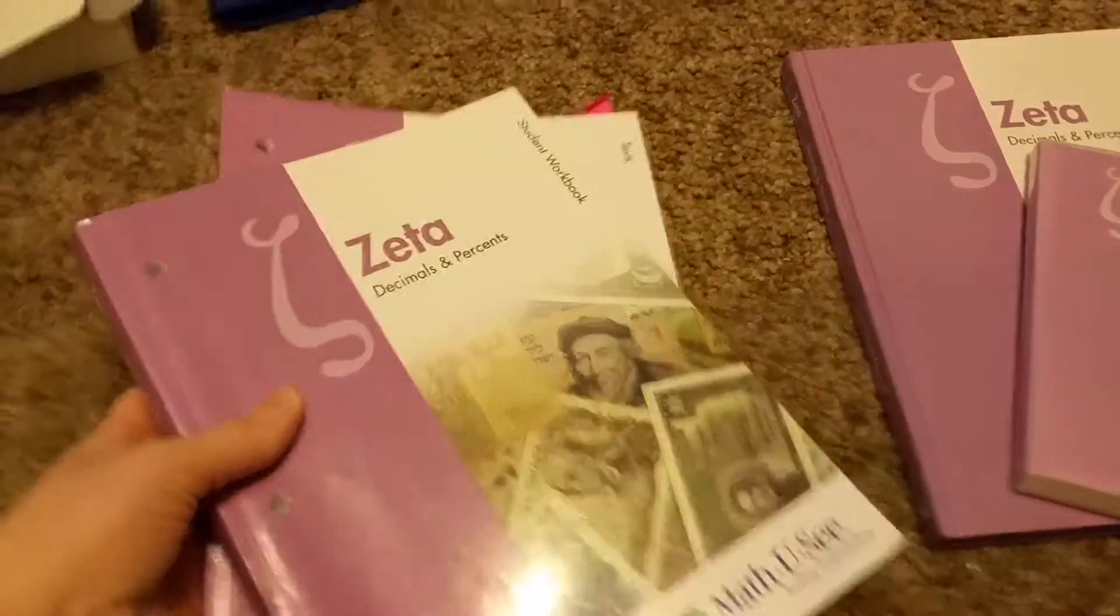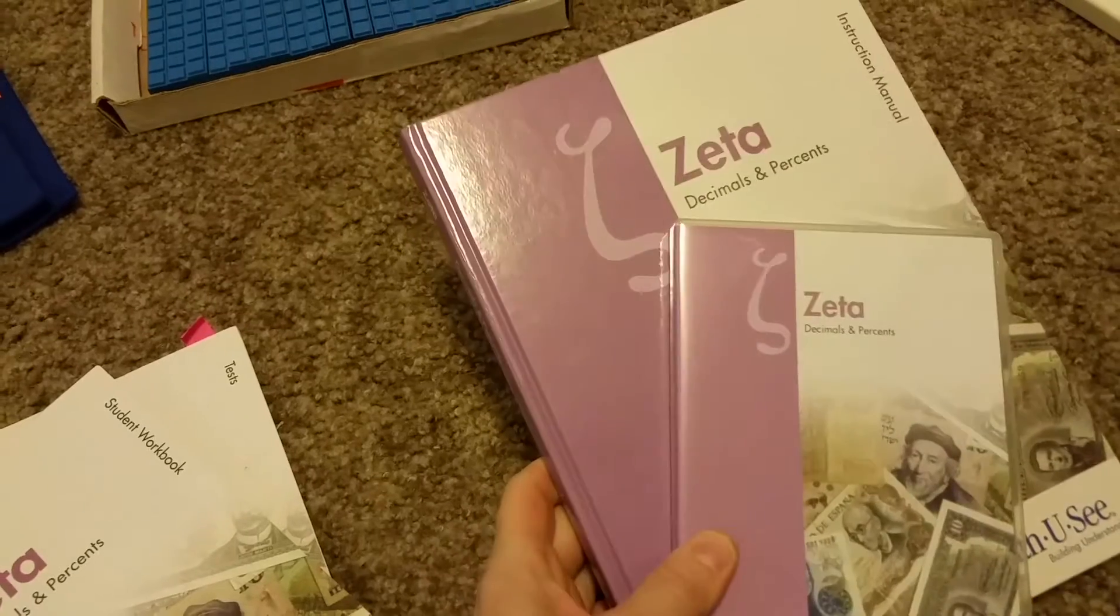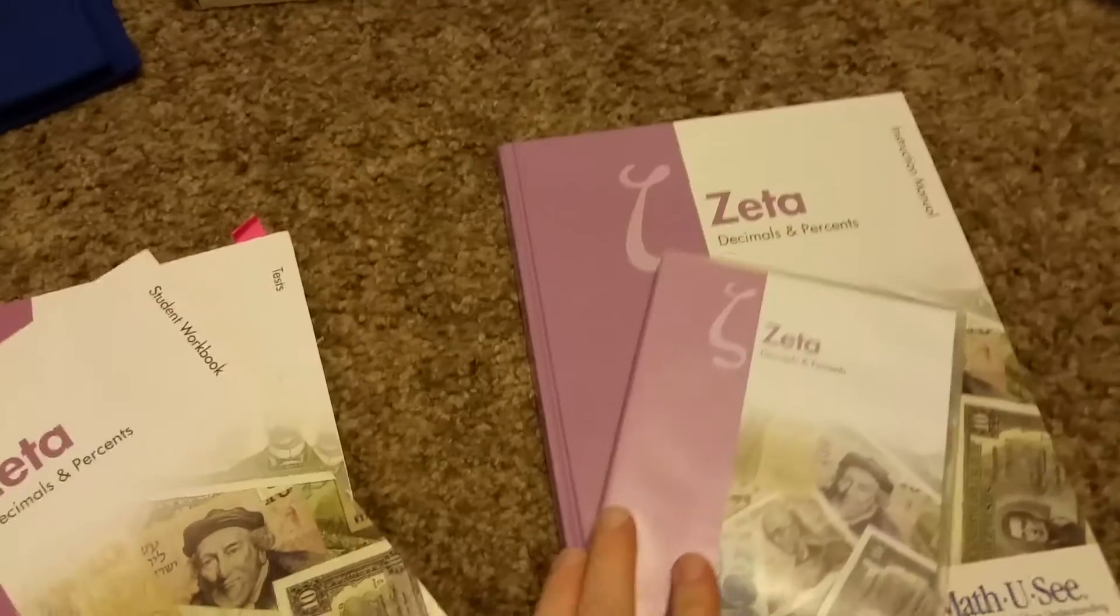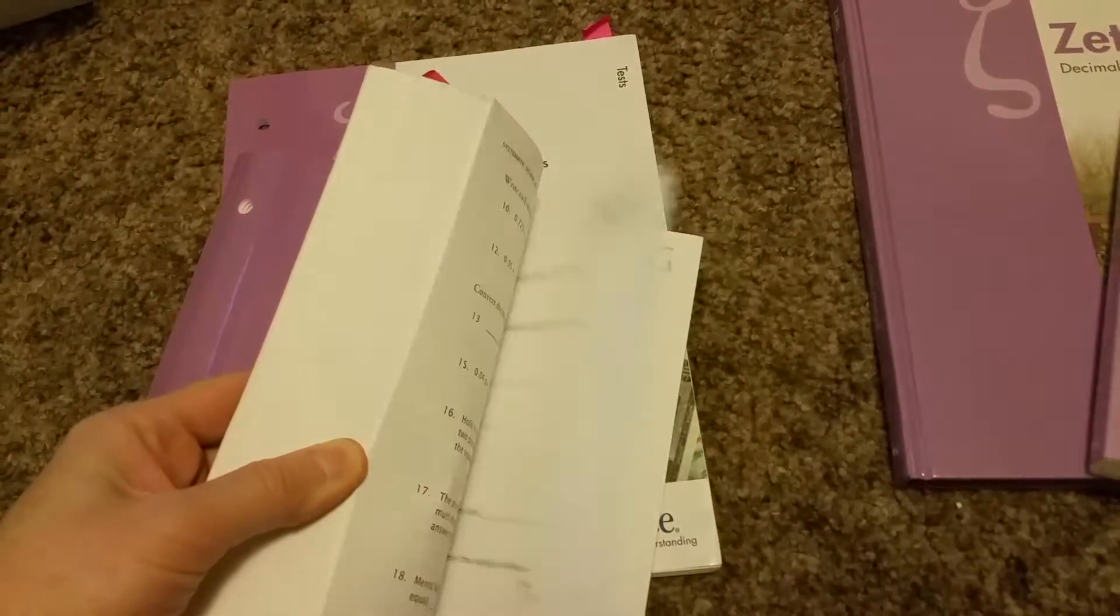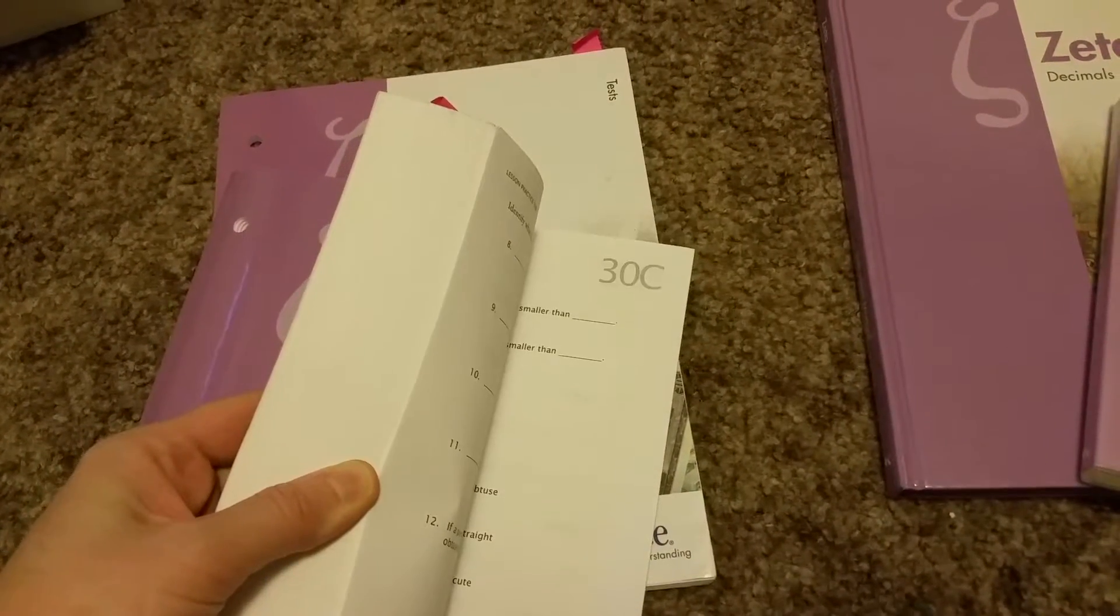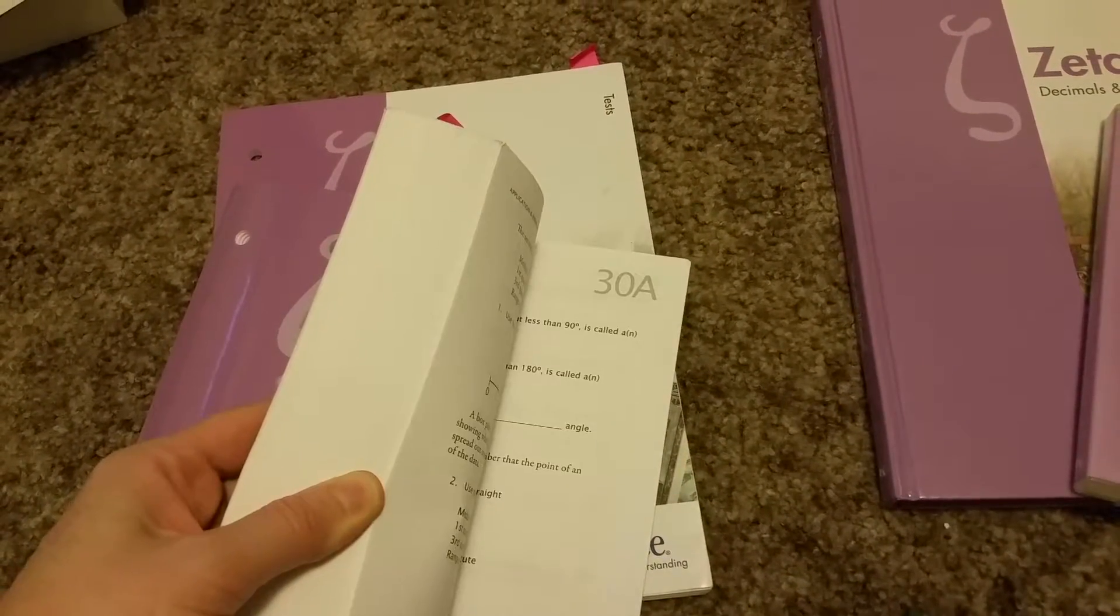So it is a student pack, the student workbook and test, and then there's a teacher pack, instruction manual and DVD. Just like all the other ones, there is 30 lessons. You do one lesson a week, so it's 30 weeks total for the year.